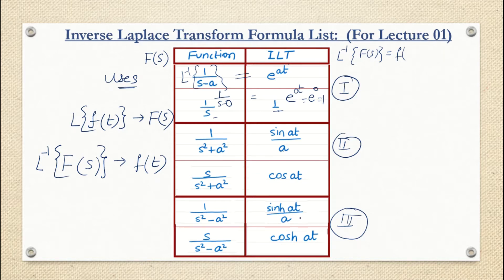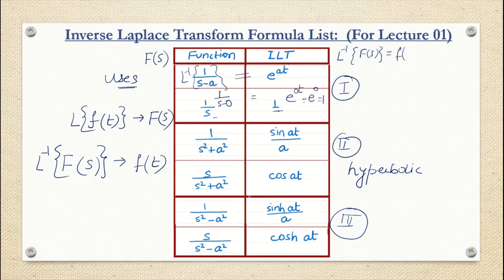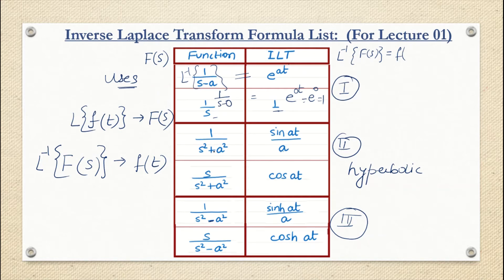Set three is similar to set two but uses hyperbolic functions. The inverse Laplace transform of 1/(s² − a²) is sinh(at)/a, and the inverse Laplace transform of s/(s² − a²) is cosh(at). Comparing sets two and three, the forms are identical except the denominator has s² + a² for the trigonometric case and s² − a² for the hyperbolic case.